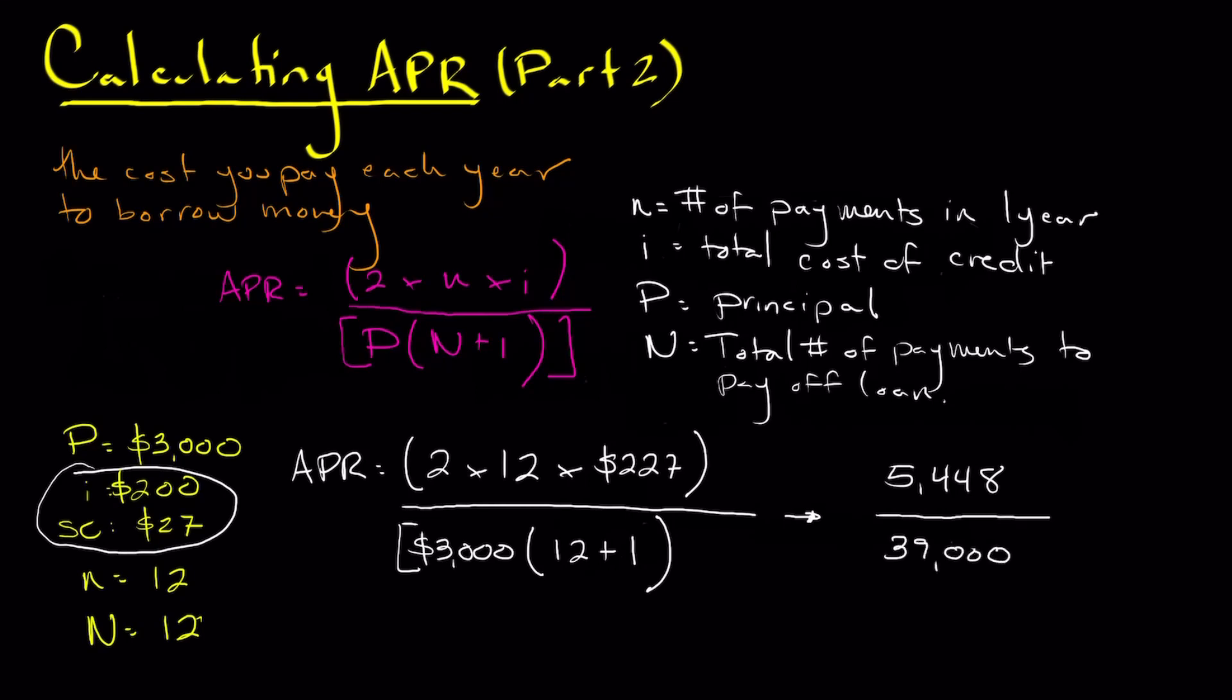Now if you take 5,448 divided by 39,000, you should get something along the lines of 0.13969. I'm going to stop at that decimal place. So if you were rounding, for example, to the nearest tenth, or hundredth for that matter, you should end up with 14%.